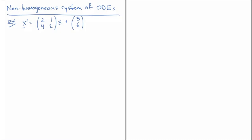So as you can see in this example, we've got X prime equals matrix (2, 1; 4, 2) multiplied by X plus (3; 6).